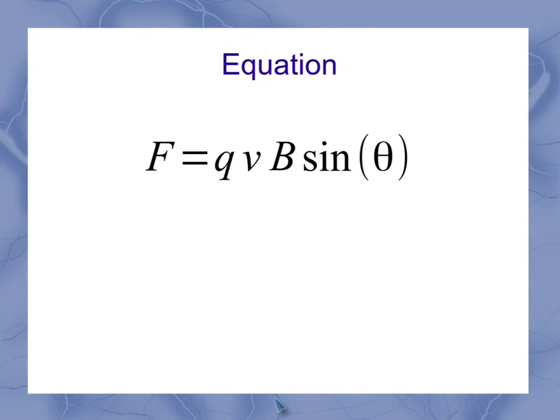So I want to take a look at what all of these quantities are. F stands for force, Q stands for charge, V stands for velocity, the B stands for B-field or our magnetic field, and the theta is the angle.